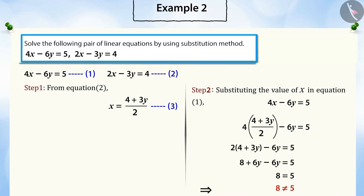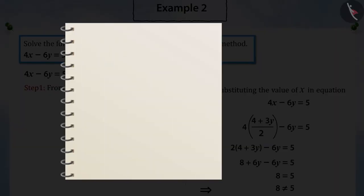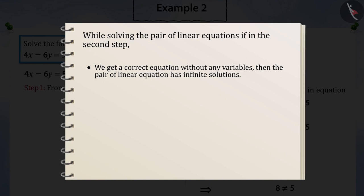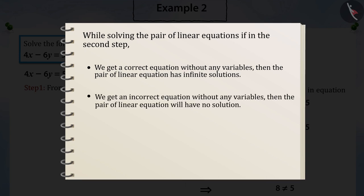Can you tell me what it means? While solving the pair of linear equations in step 2, if we get a correct equation without any variable, then there will be infinite solutions to the pair of linear equations. And if we get an incorrect equation without any variable, then there will be no solution to the pair of linear equations.